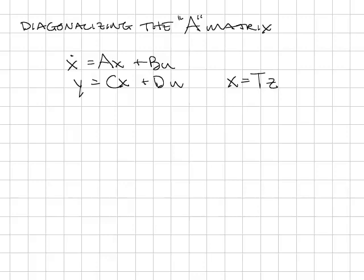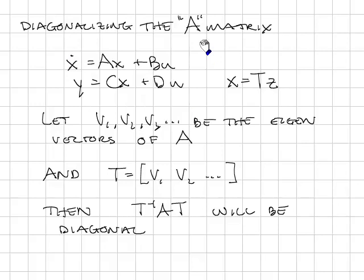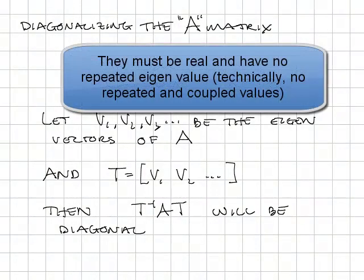We can diagonalize the system with the T matrix as follows. Let V1, V2, V3, and so on be the eigenvectors of A. We're not going to discuss how to calculate eigenvectors in this class — you'll need to review your linear algebra. In most cases, we'll use MATLAB to compute the eigenvectors of A. If we create a matrix T where the columns of T are the eigenvectors of A, then T inverse AT will be diagonal. We can use the transformation x = ZT to diagonalize our state-space system and create a system in which the states are decoupled. This works great when the eigenvalues of A are real.